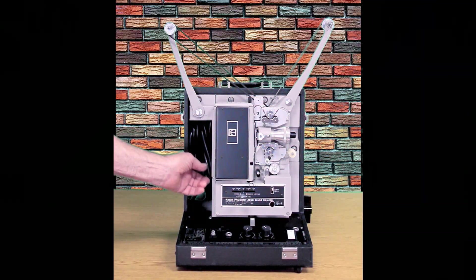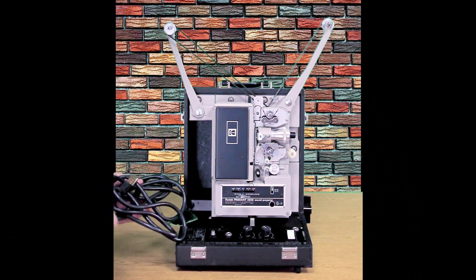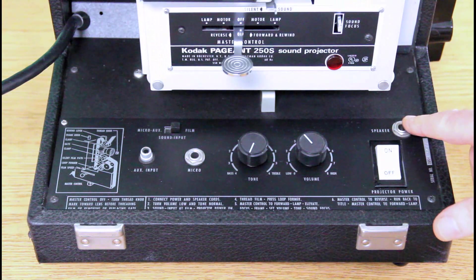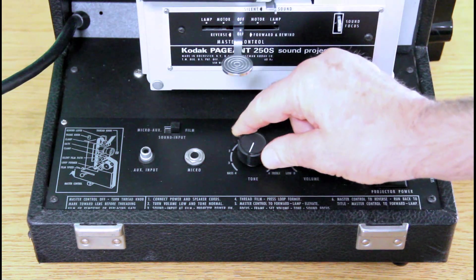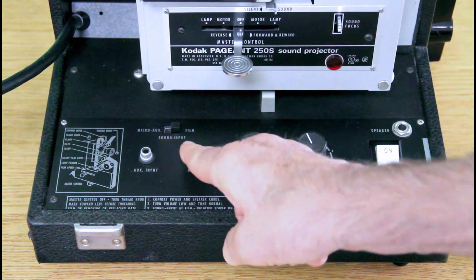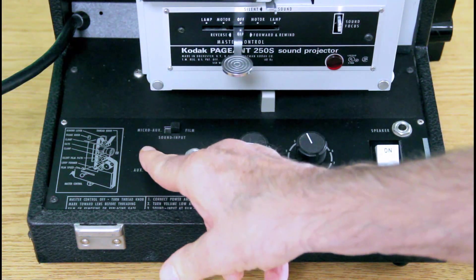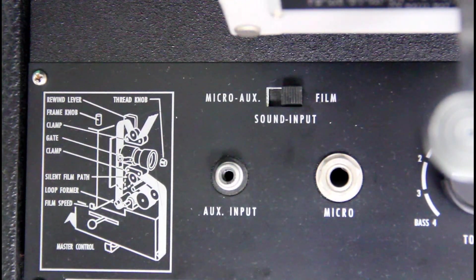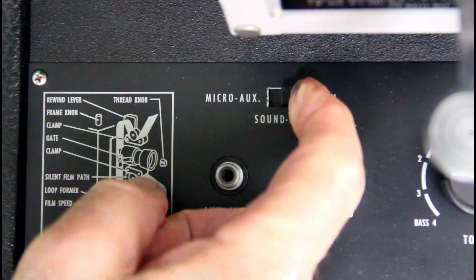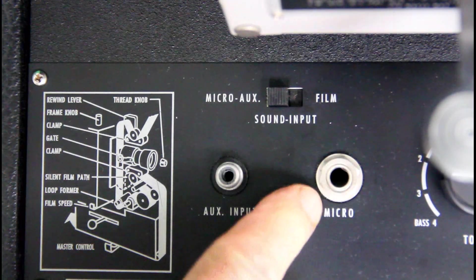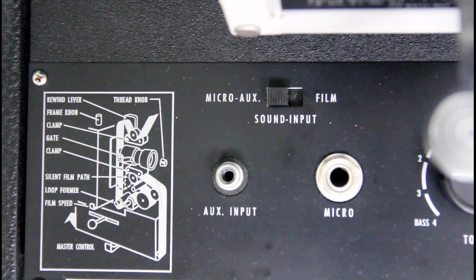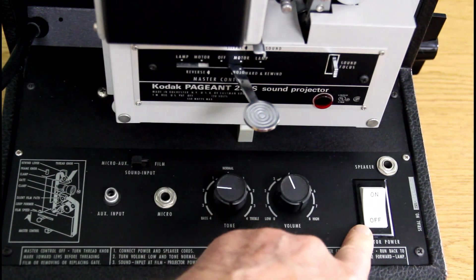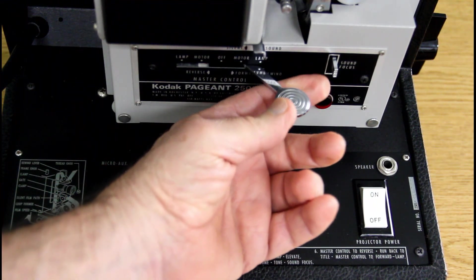This is the on-off button. This is the RCA jack for the speaker. Here's the volume control knob and the tone knob. This is for a microphone, this is for auxiliary input. This turns the motor on after you turn the power on first, and this turns the lamp on with the motor.